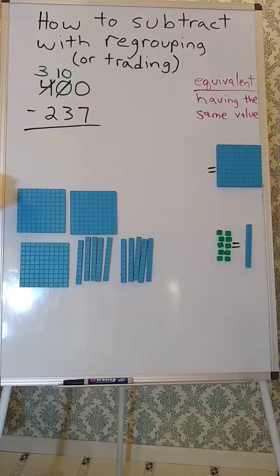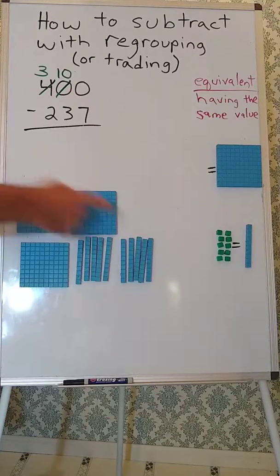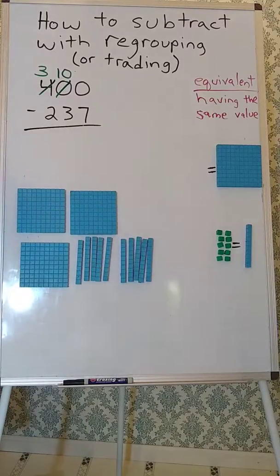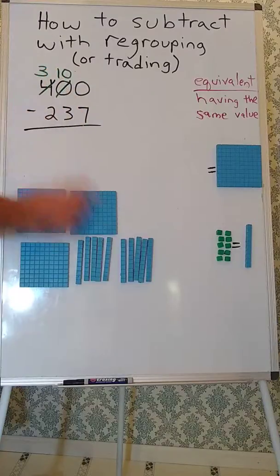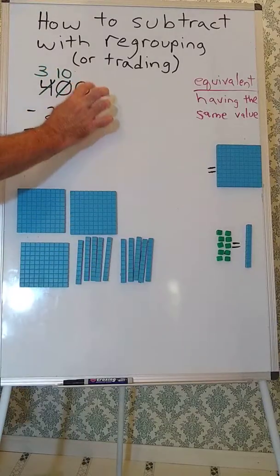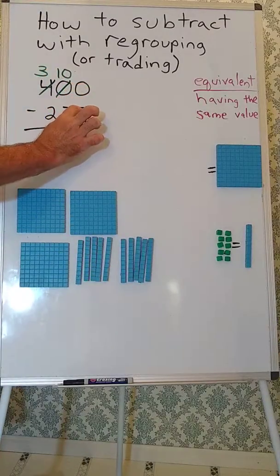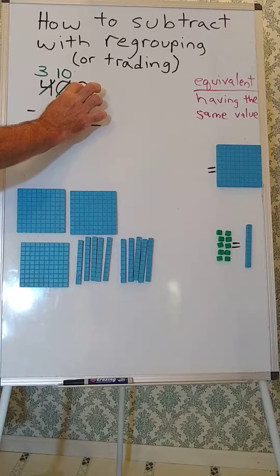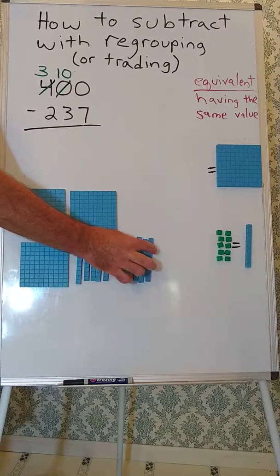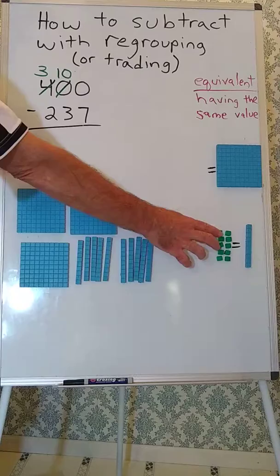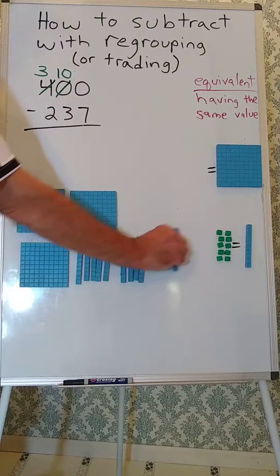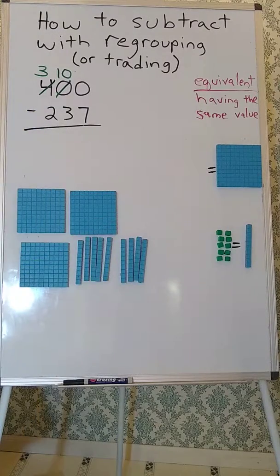Okay, so what do we do next? Well, if you said trade a 10 for 10 ones, then you're correct. We're going to trade one of these tens, because we started the problem and we saw we had to take away 7 ones and we didn't have any ones. So we're going to trade this 10 for 10 ones. They're equivalent, so we can do that.